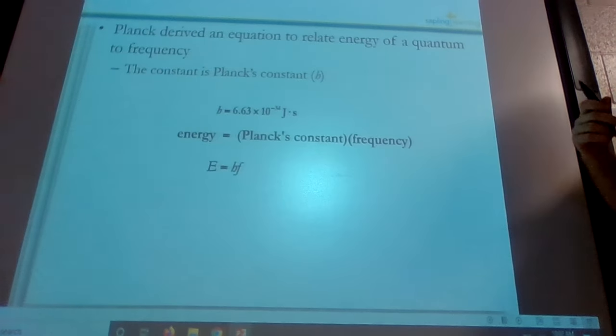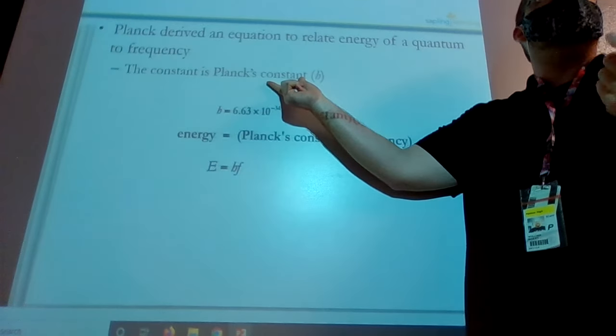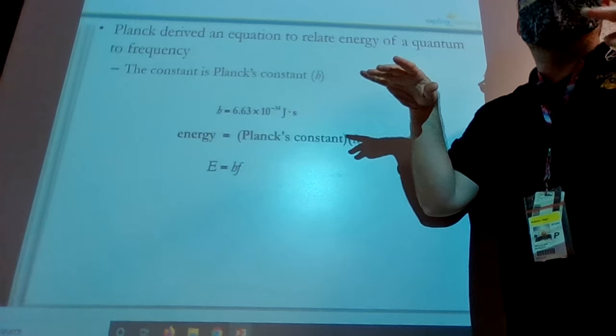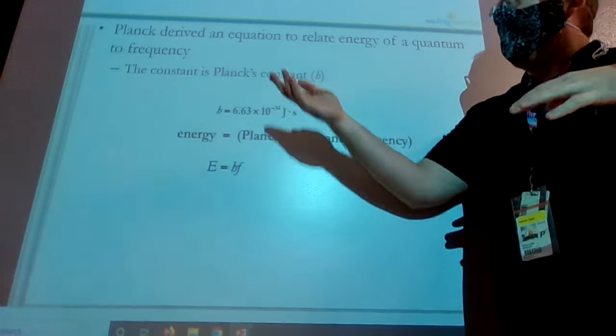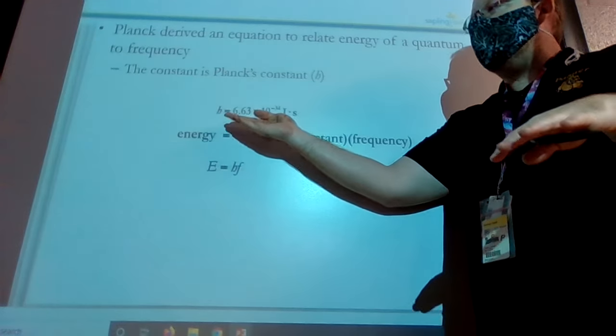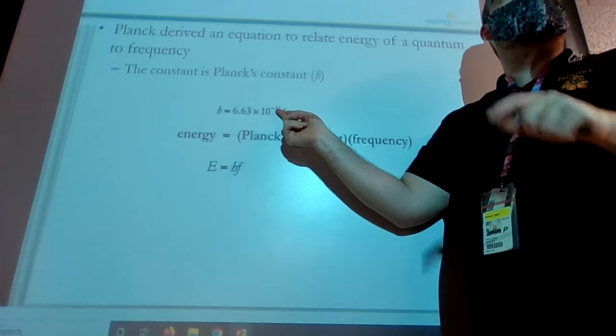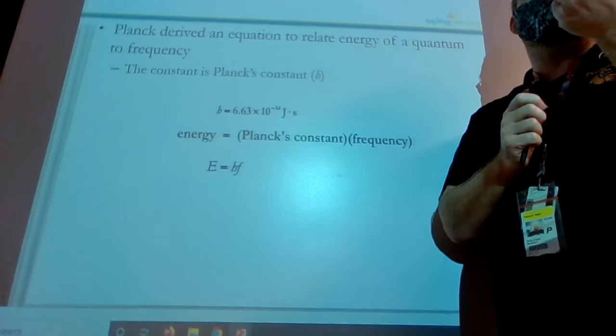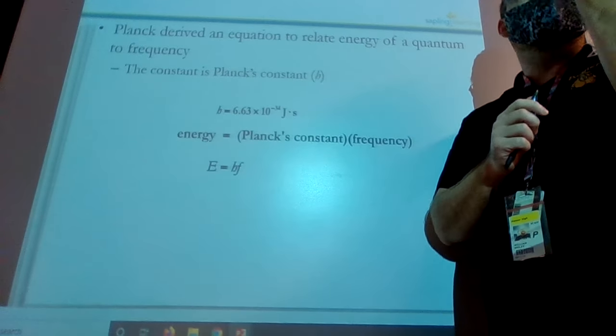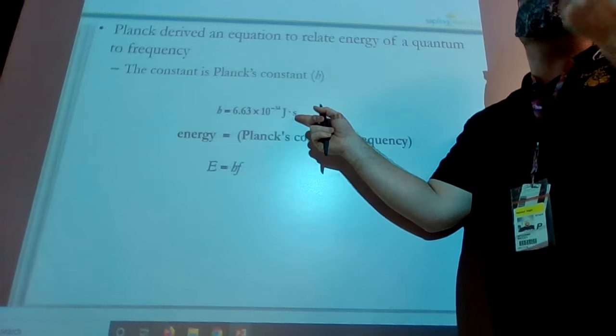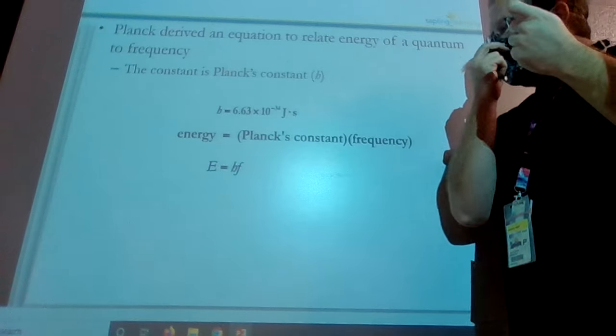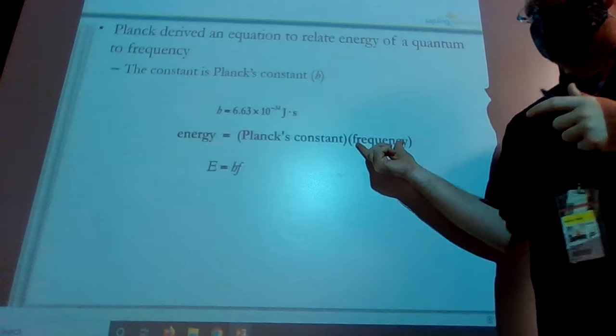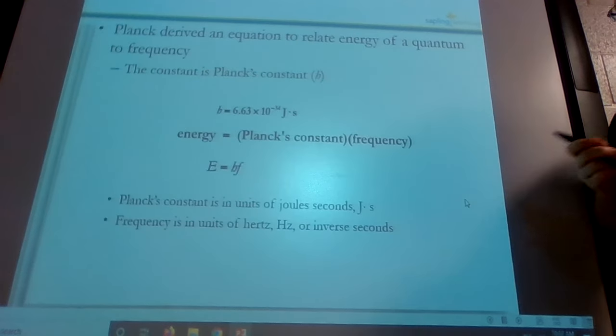Now, what is Planck's constant? If it's a constant, it always stays the same. It doesn't ever change. Just like the speed of light is a constant, it's always going to be 3.00 times 10 to the 8th power. Planck's constant is always going to be 6.63 times 10 to the negative 34. That is an extremely small number. So when you're talking about how much energy a little tiny piece of light has, it's going to be just a little bit of energy, very, very small. That being said, you're going to be multiplying and using this number. So you're going to be multiplying it by the frequency and getting your answer out of that.